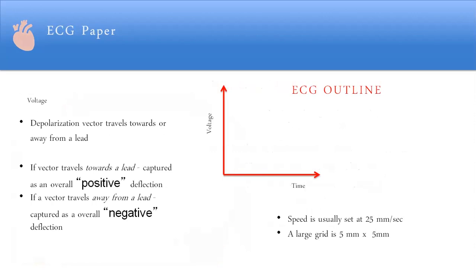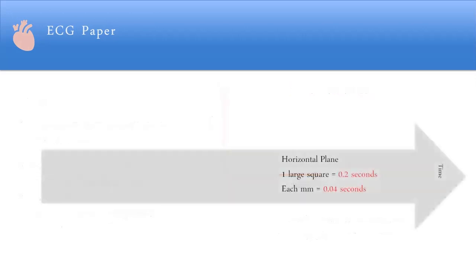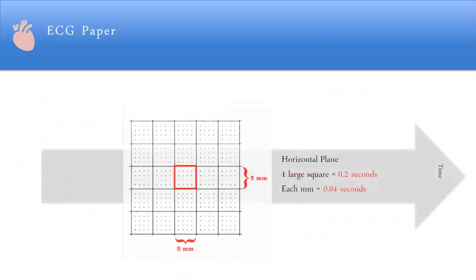The depolarization vector, when traveling towards the lead, produces a positive deflection, and when moving away from the lead, produces a negative deflection. The vector is positive toward the lead and negative in the opposite direction.